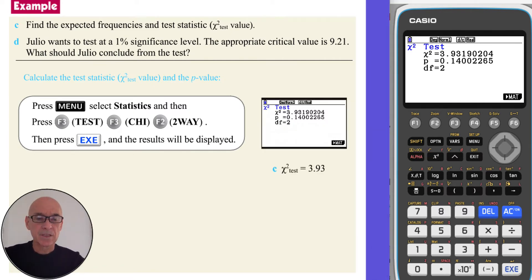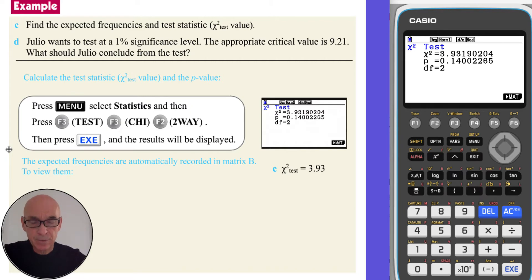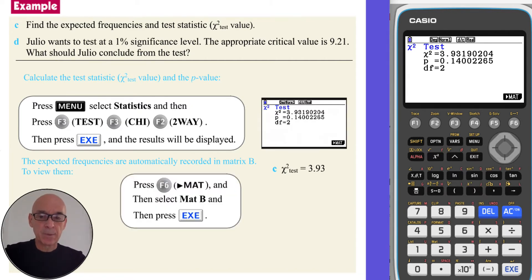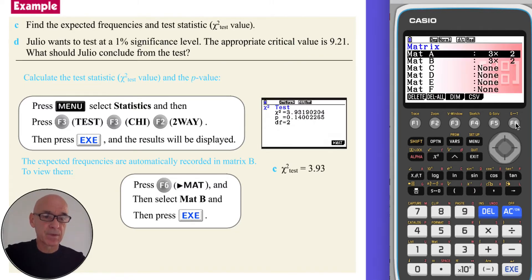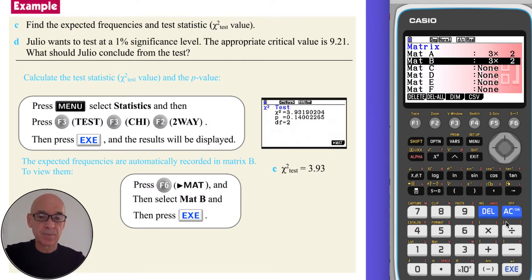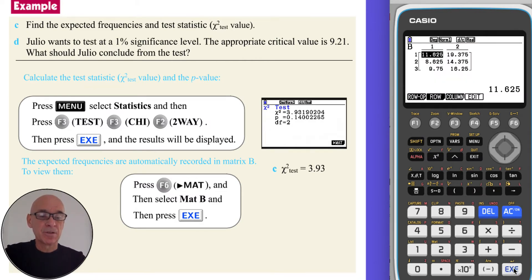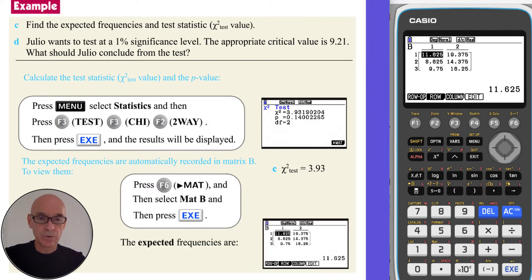The test statistic is 3.93. The expected frequencies have automatically been recorded in matrix B. If we now press F6 on our calculators where it says matrix, and scroll down to matrix B and press execute, you'll see the expected frequencies displayed on your screen, also shown to the right here.